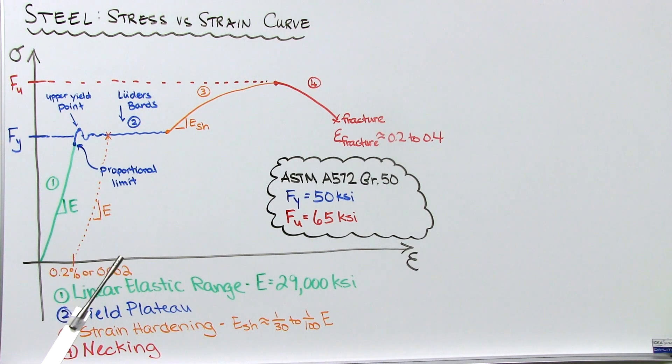After yielding, things change dramatically. Once steel yields, it begins to stretch without any increase in force. We call this the yield plateau. And the length varies depending on the grade.